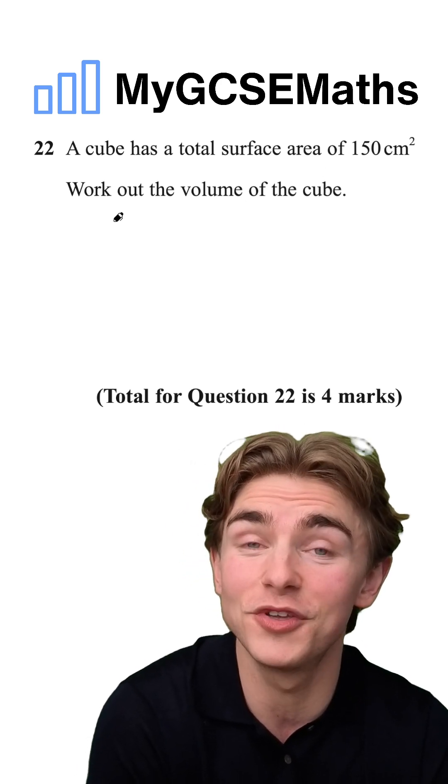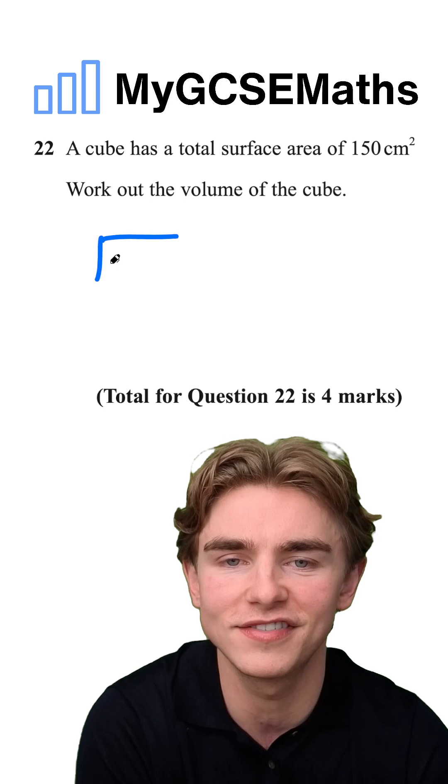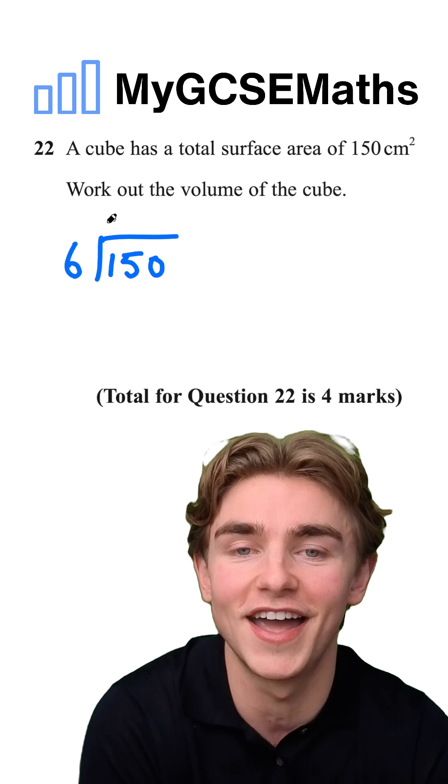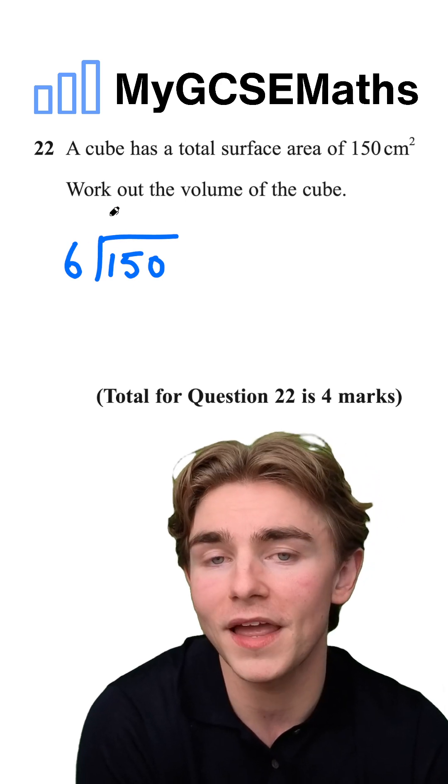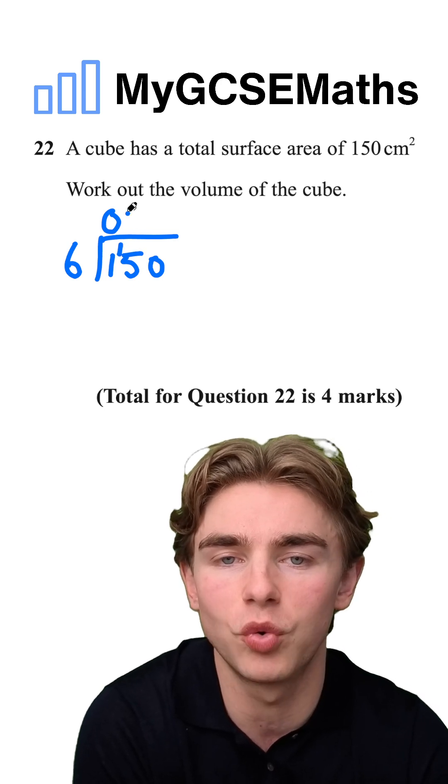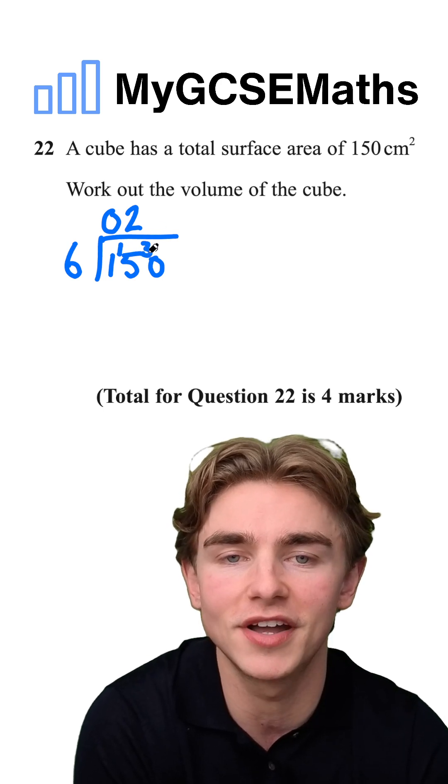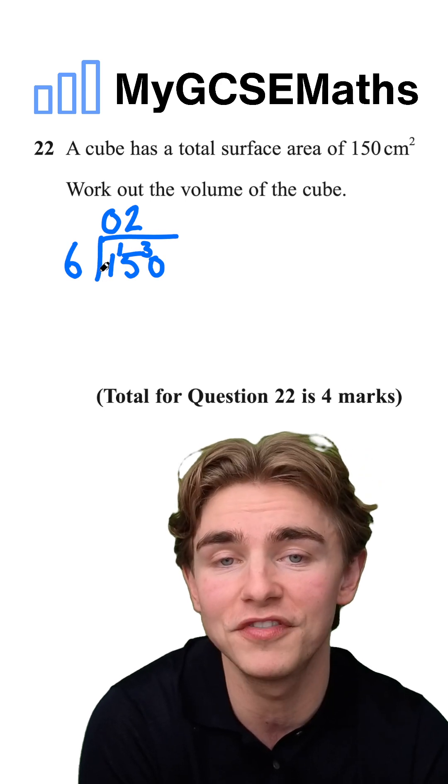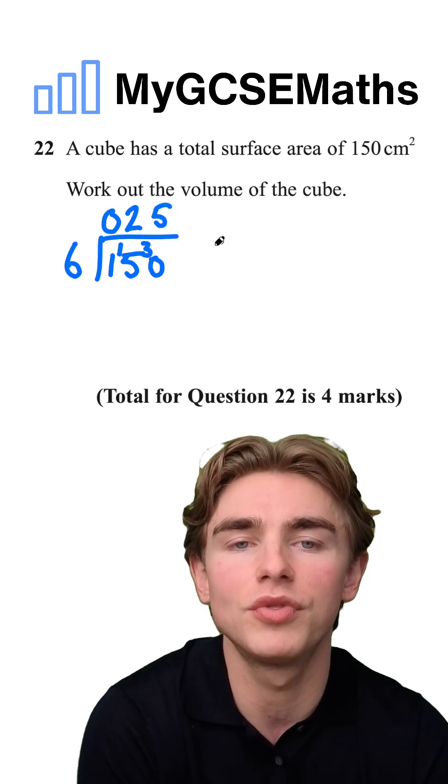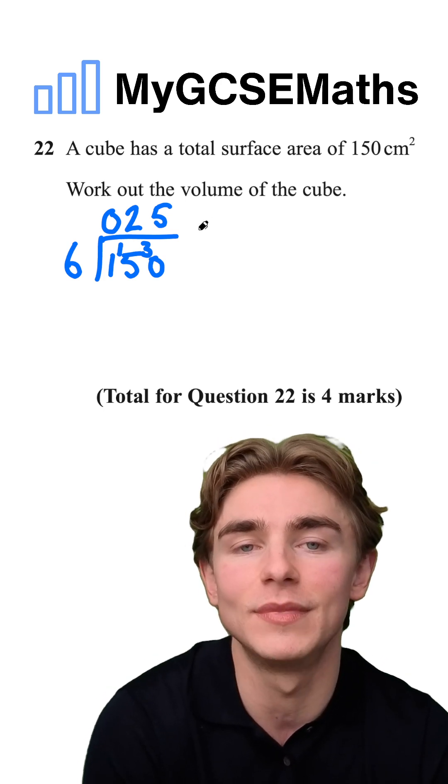Let's get that done. Most of you aren't going to be able to do that in your head, that's for sure. So let's use the bus stop method. We're going to write out a bus stop. We've got 150 on the inside and six on the outside. Six into one is going to go in zero times with a remainder of one. Six into 15 is going to go in twice because six times two is 12. There's going to be a remainder of three because 15 is three bigger than 12. Finally, six into 30 is going to be five. So we now know that the area of one of those faces is 25 centimeters squared.